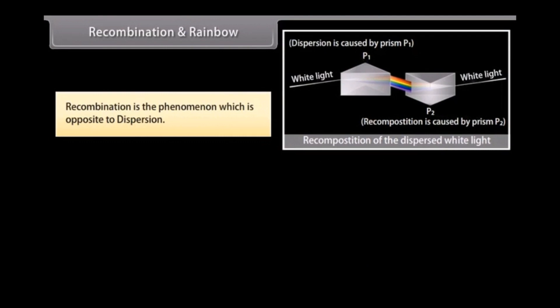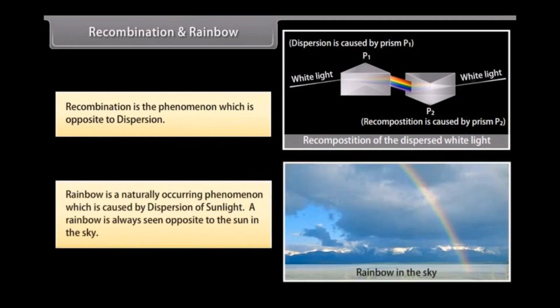Isaac Newton observed that if two glass prisms are placed parallel to each other with one inverted with respect to the other, white light entering one prism gets split into seven colors, which then recombine in the second prism to give white light again — this is termed recombination. A rainbow is a natural phenomenon that occurs as a result of dispersion and is always seen opposite to the sun. During rain, water drops act as prisms, refracting, dispersing, and internally reflecting sunlight to produce the rainbow.